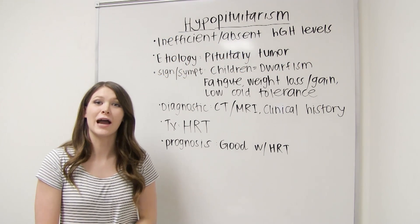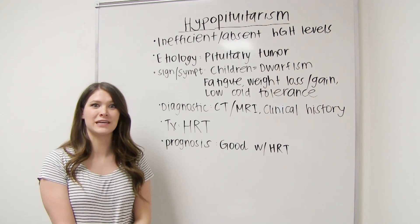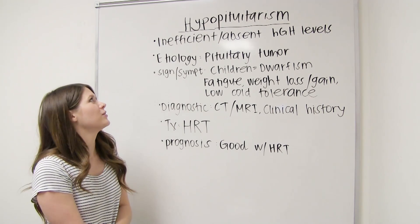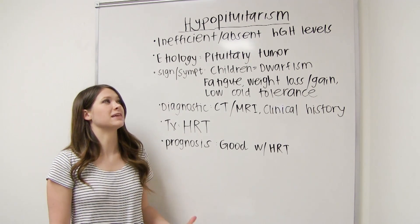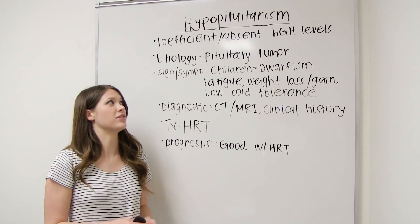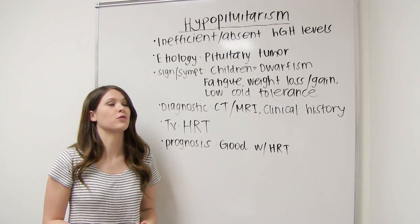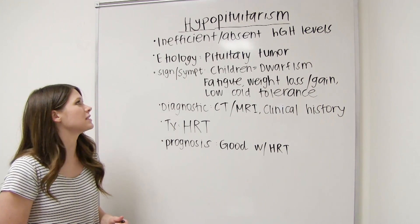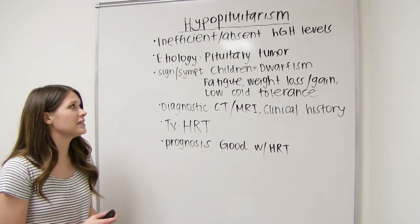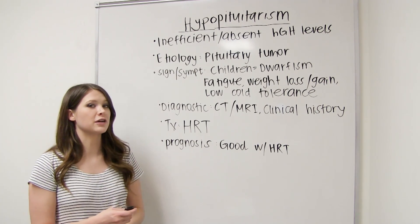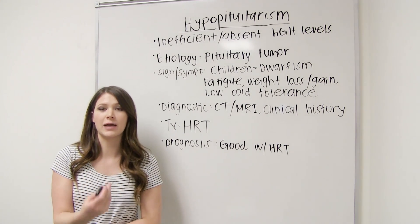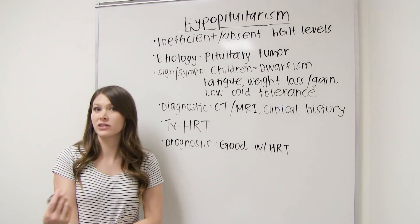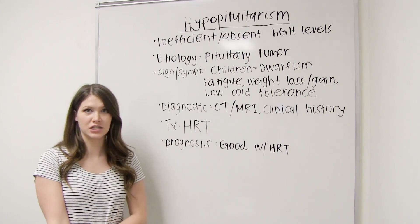Now we're going to talk about hypopituitarism, which is the inefficient or absent levels of the human growth hormone. The etiology of this includes a pituitary tumor, a tumor on the hypothalamus, or even a genetic mutation.